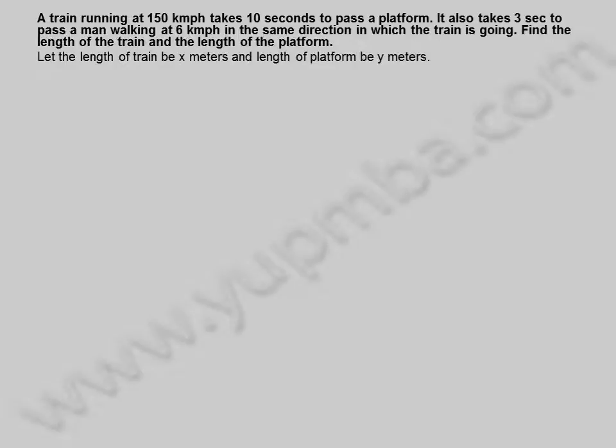A train running at 150 kilometers per hour takes 10 seconds to pass a platform. It also takes 3 seconds to pass a man walking at 6 kilometers per hour in the same direction in which the train is going. Find the length of the train and the length of the platform. Let the length of train be x meters and length of platform be y meters.